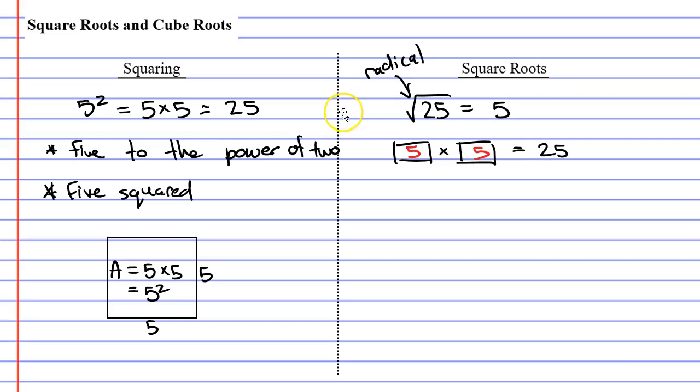What you will notice is that finding the square root is the reverse of squaring. When you square 5, you get 25. When you square root 25, you get 5.